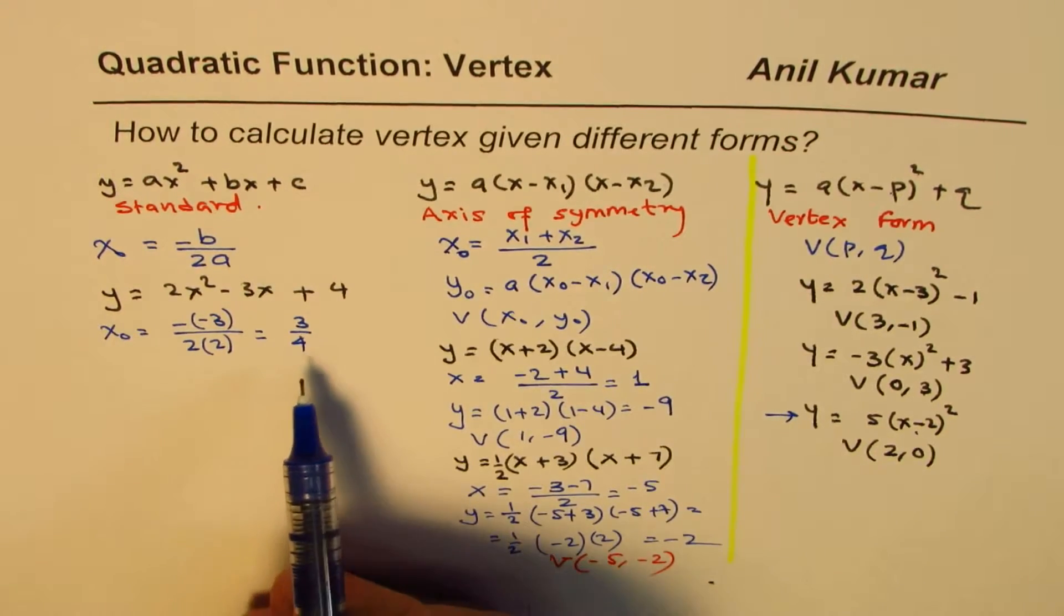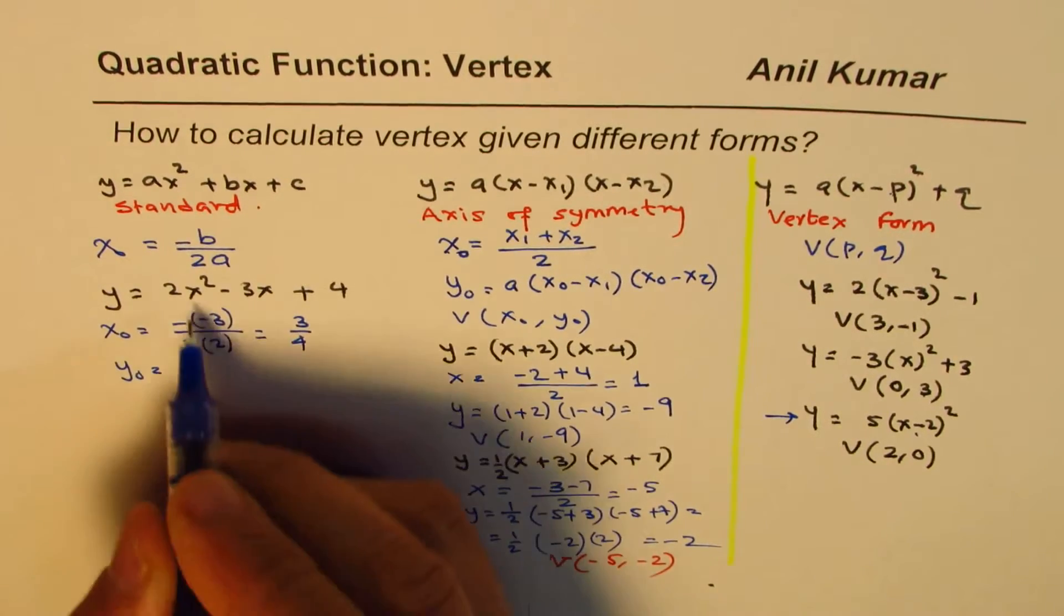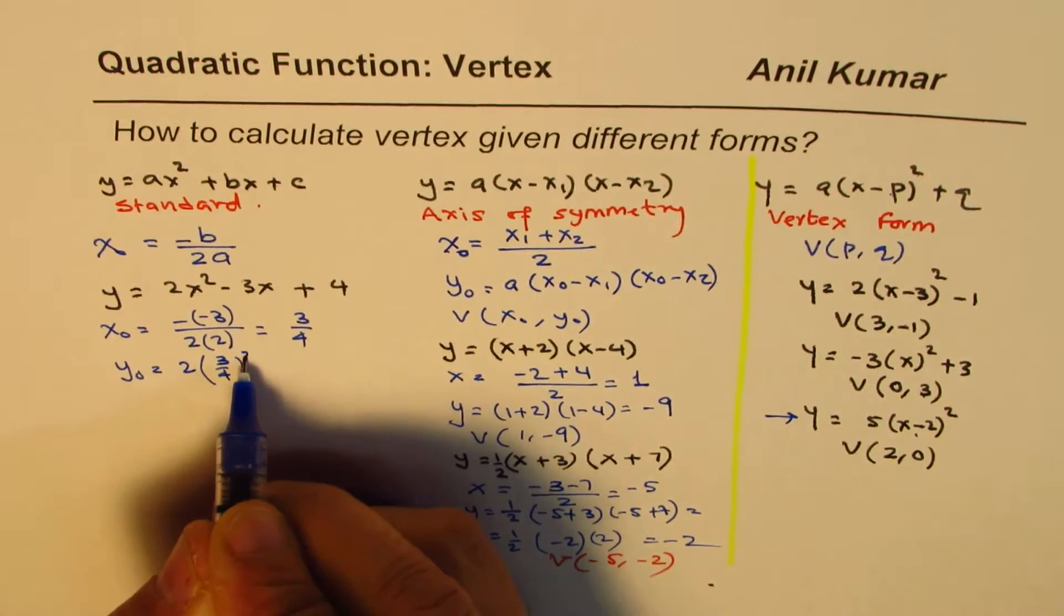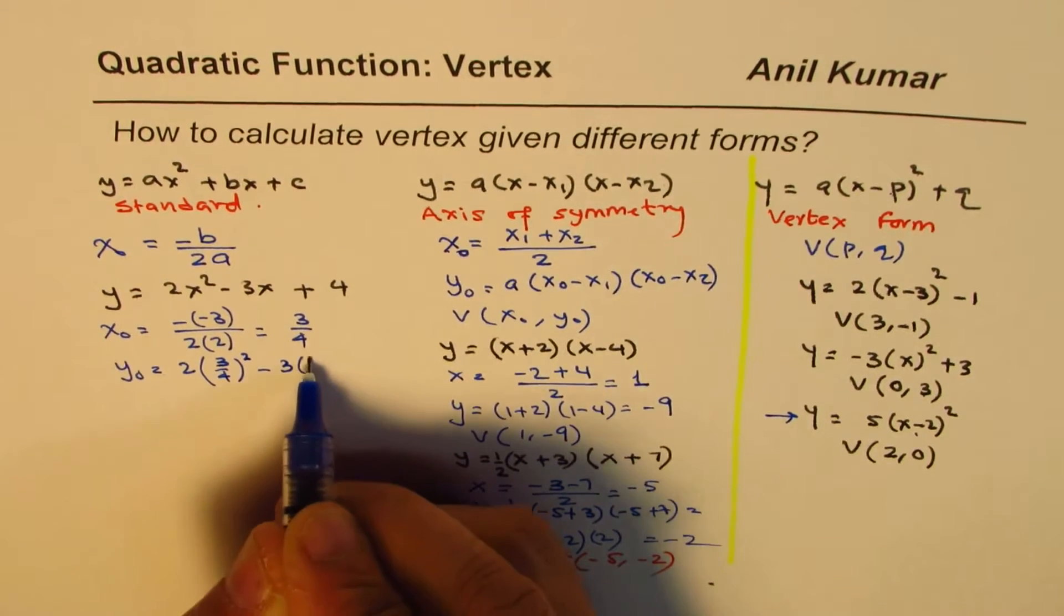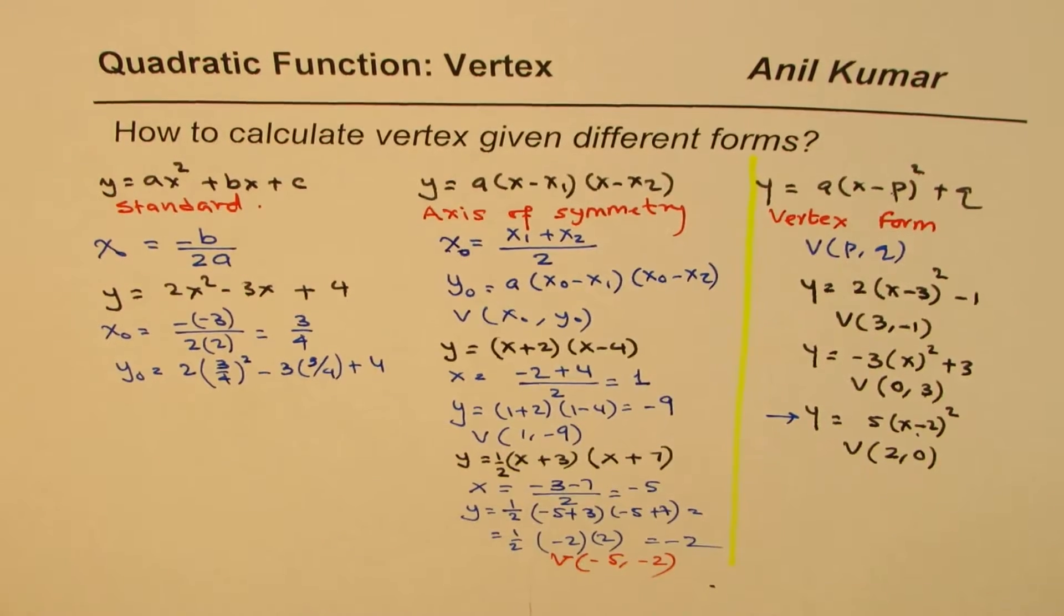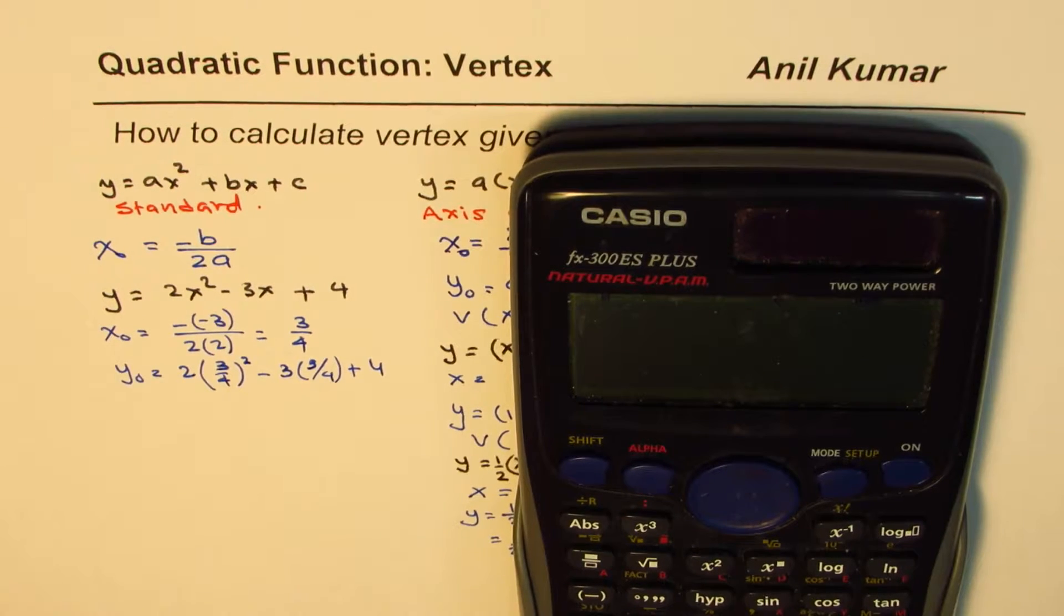Now that's too complicated to find all. But anyway, what you could do is you could find y value is 2 times (3 over 4)² minus 3 times 3 over 4 plus 4. Use the calculator.